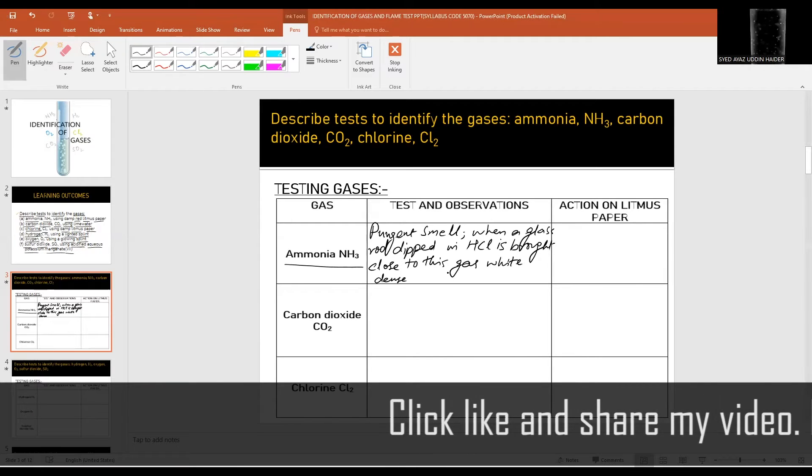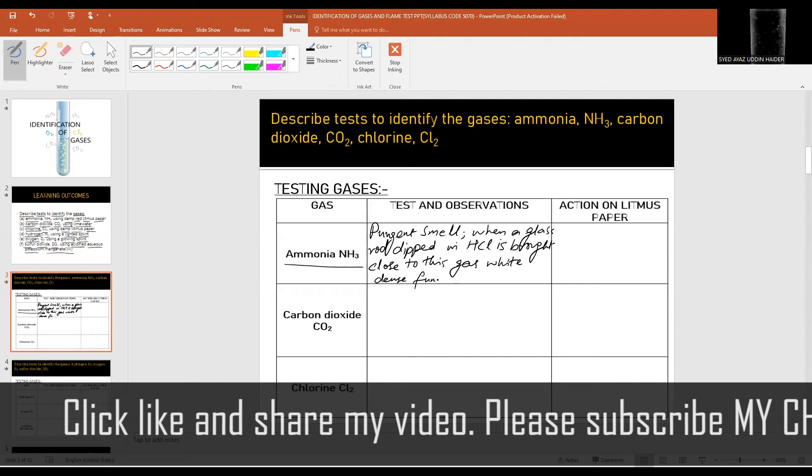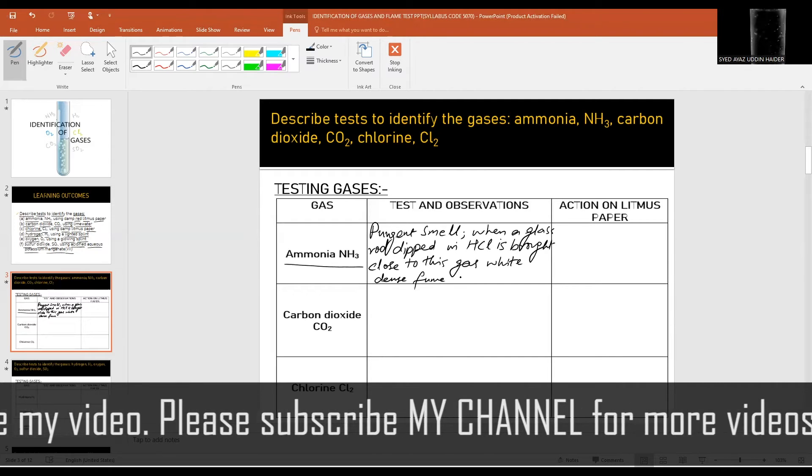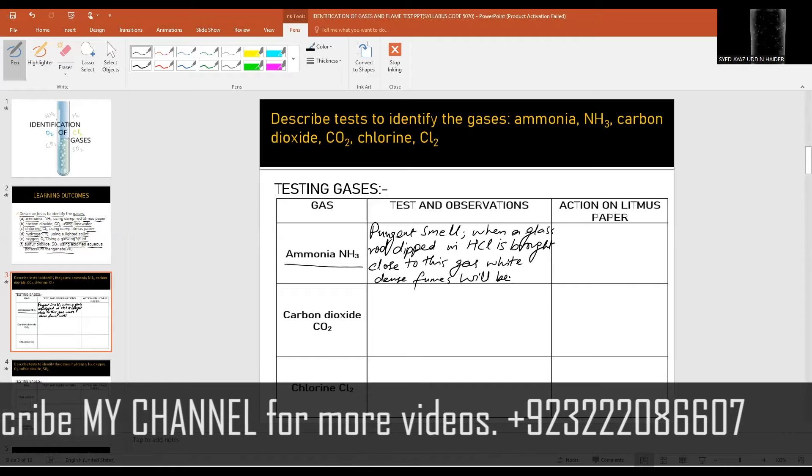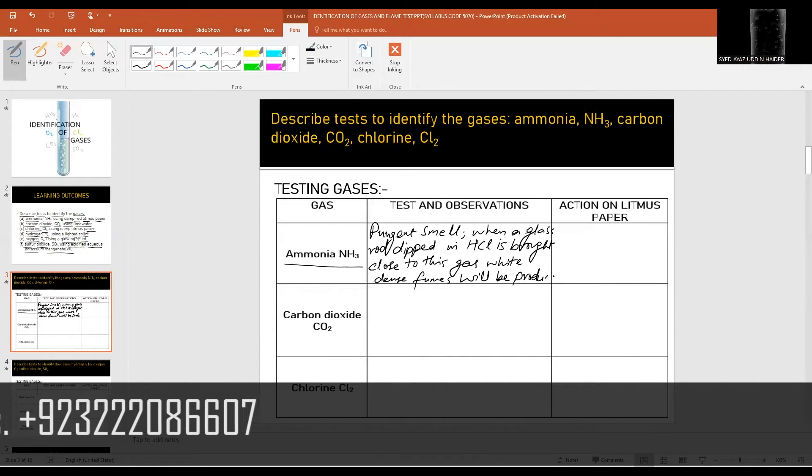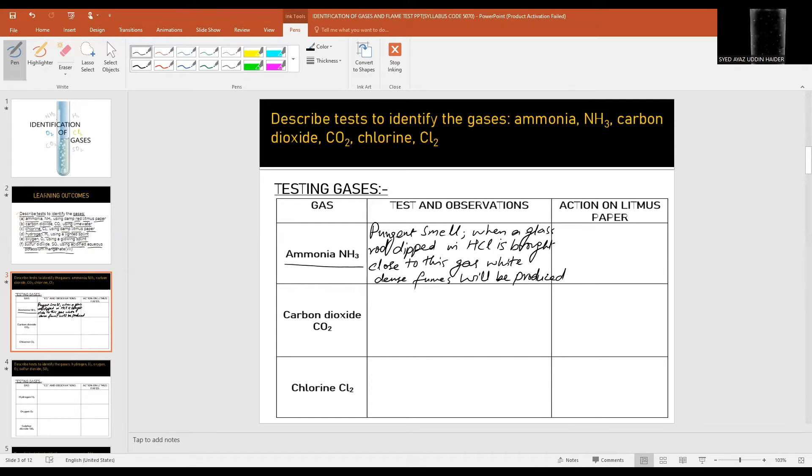Action on litmus paper: it turns moist damp red litmus to blue because the gas is basic or alkaline in water. This produces OH negative ion in water.